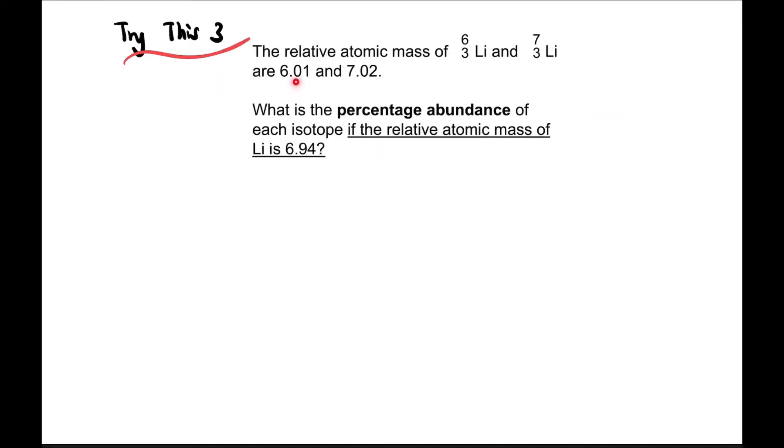Try this problem. The relative atomic mass of Li-6 and Li-7 are 6.01 and 7.02, so those are the masses mi. The question asks: what is the percentage abundance of each isotope if the relative atomic mass is 6.94? They've given the Ar which is 6.94 without unit.